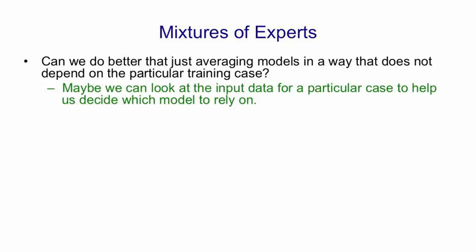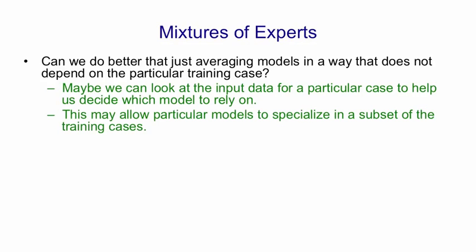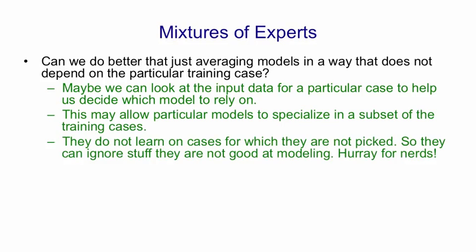So the idea is that we can look at the input data for a particular case during both training and testing to help us decide which model we can rely on. During training, this will allow models to specialize on a subset of the cases. They then will not learn on cases for which they're not picked, so they can ignore stuff they're not good at modeling. This will lead to individual models that are very good at some things and very bad at other things.